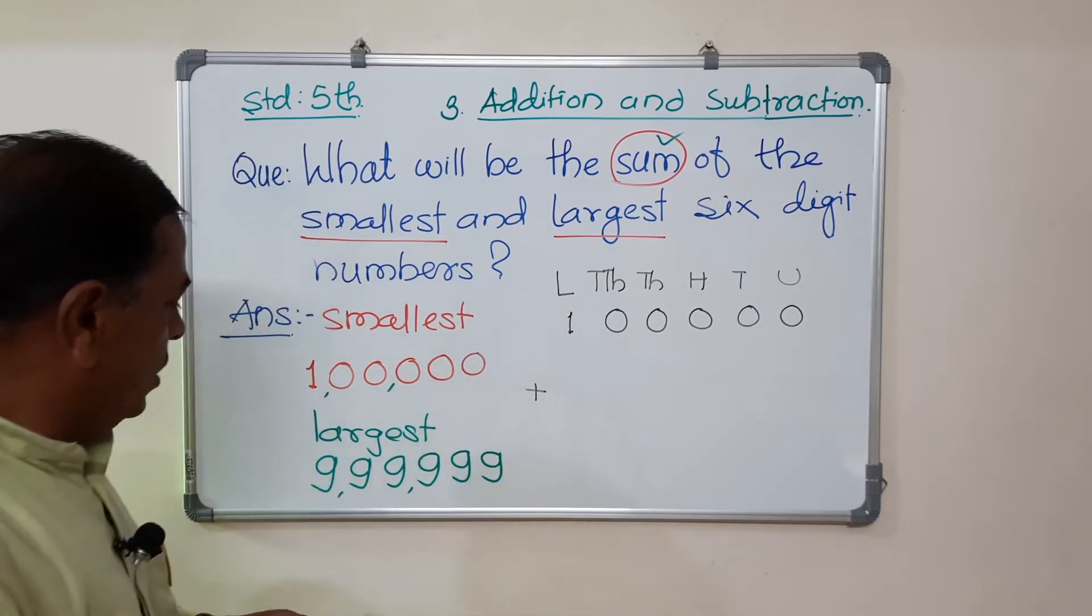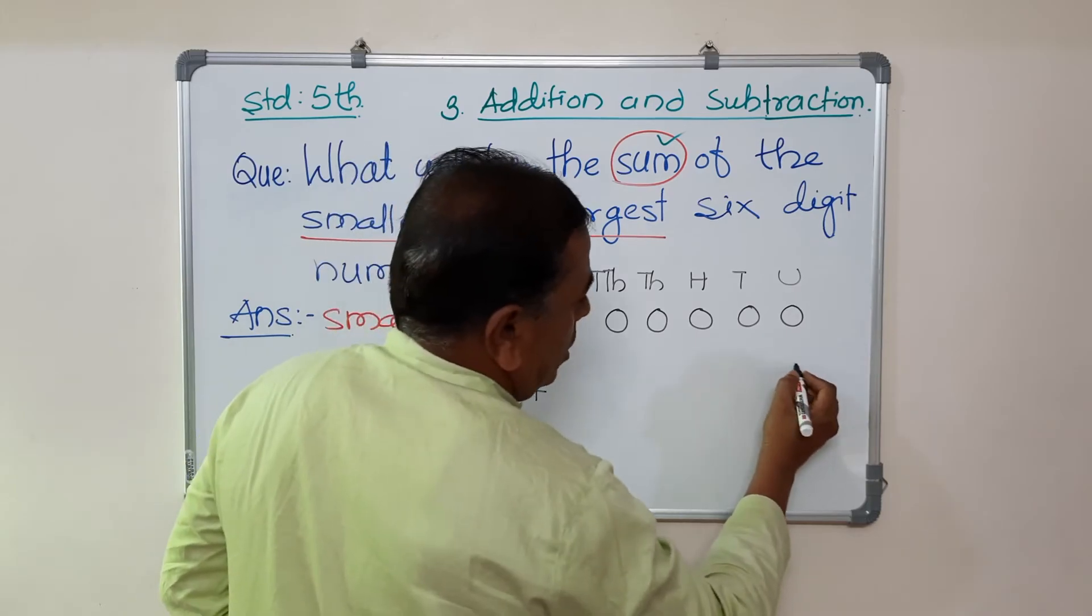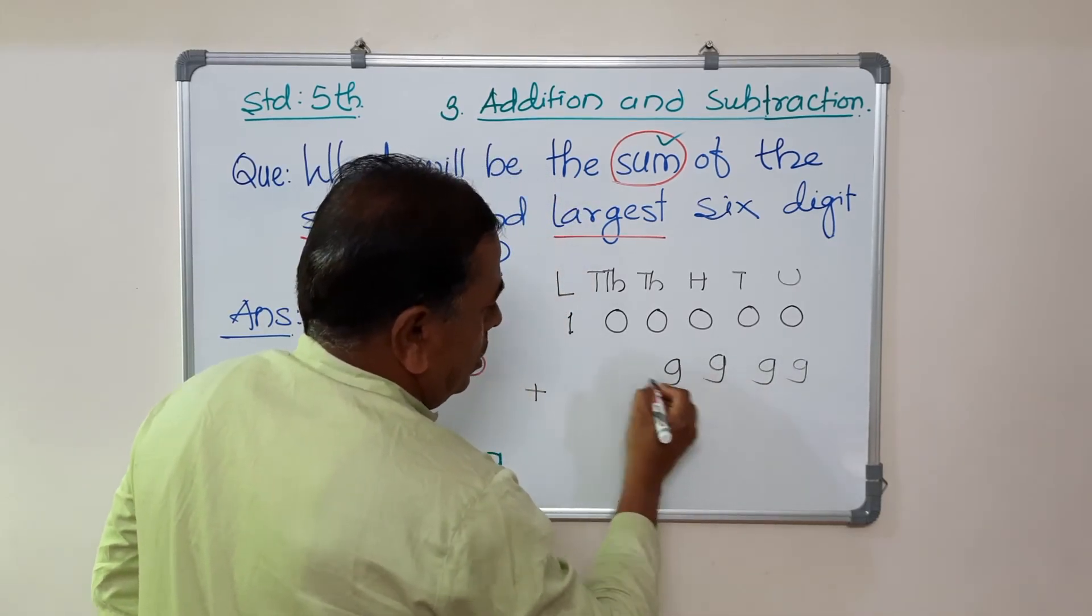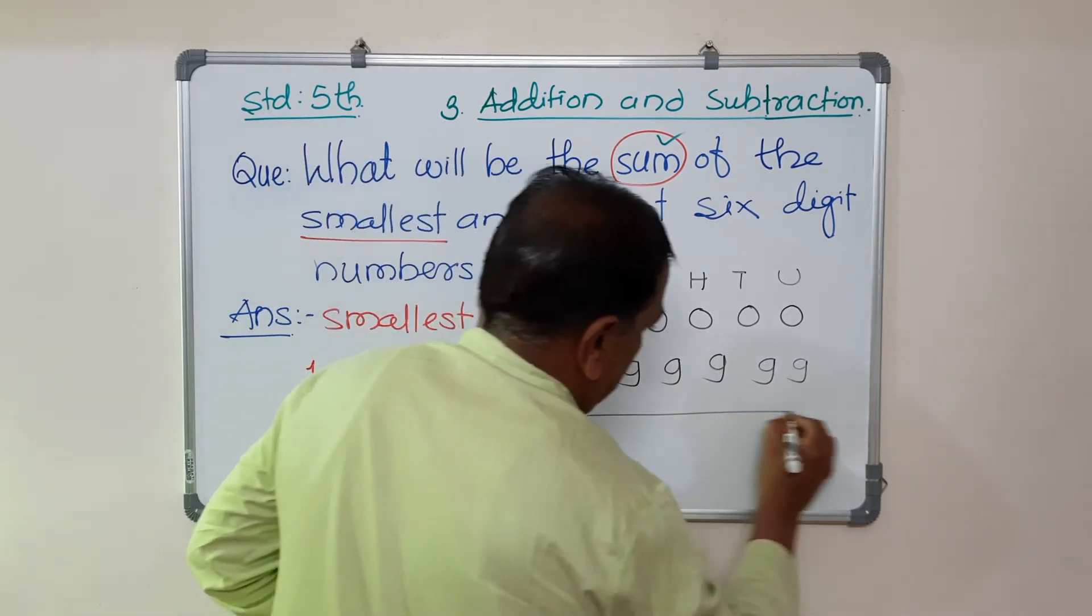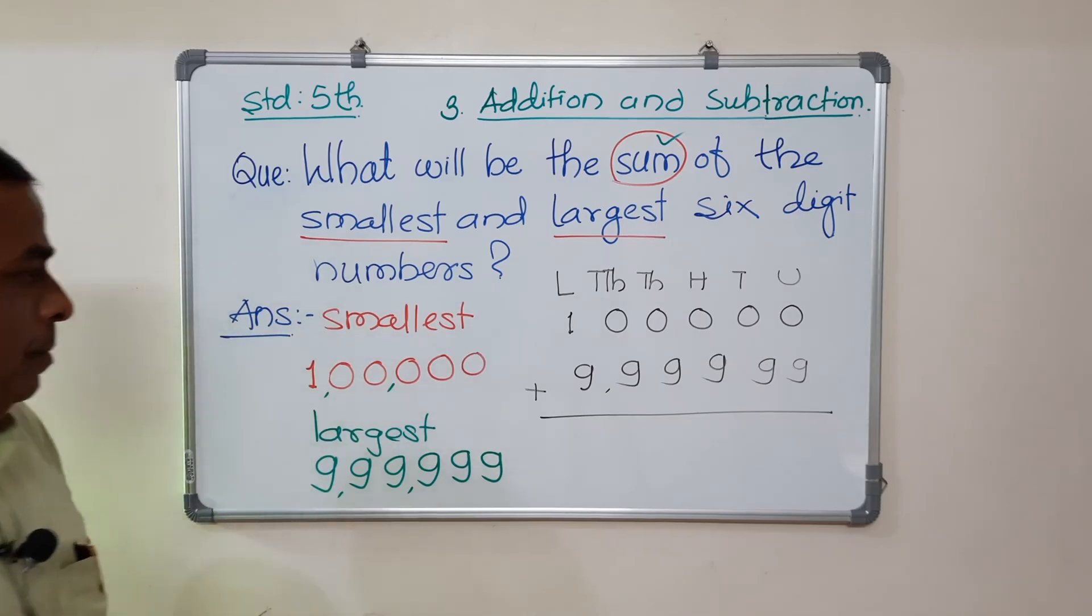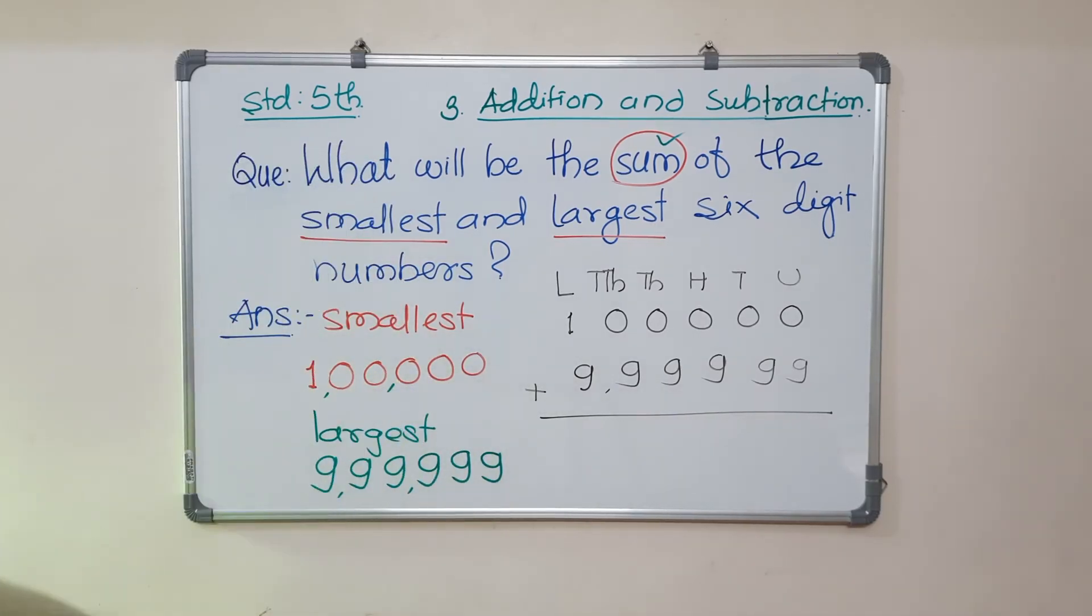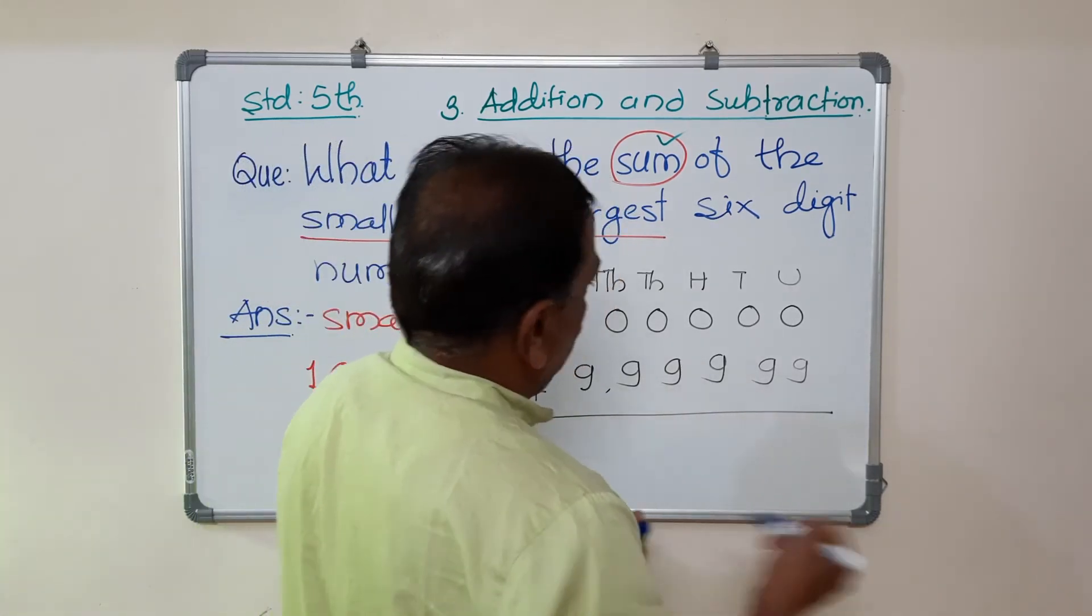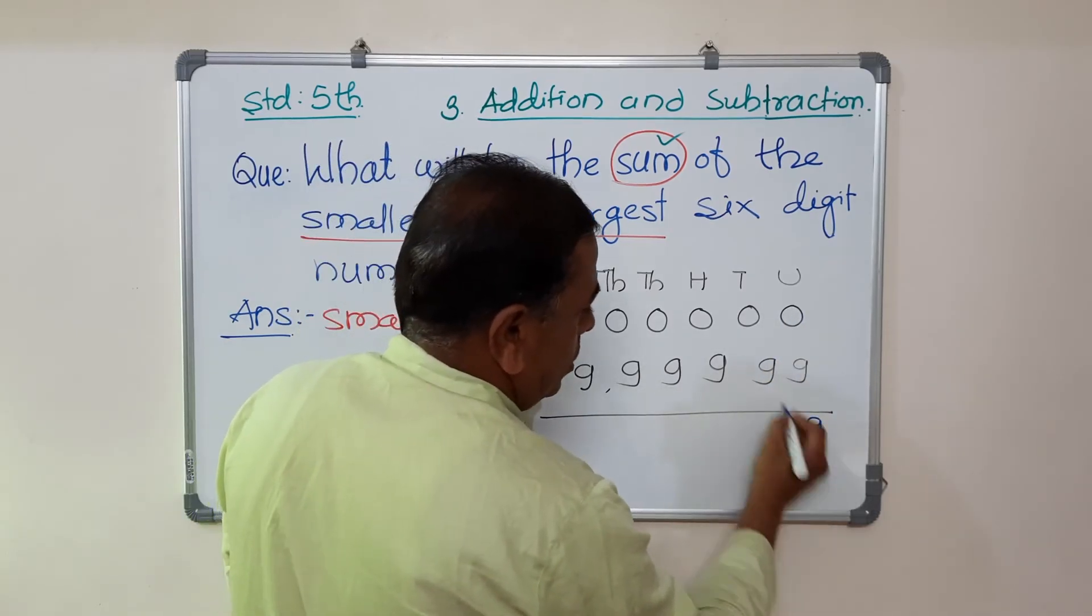Plus, second one is 9 lakh, 99,999. It's very easy. 0 plus 9, how many? 9.